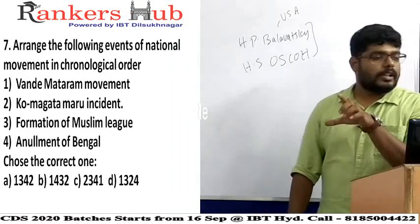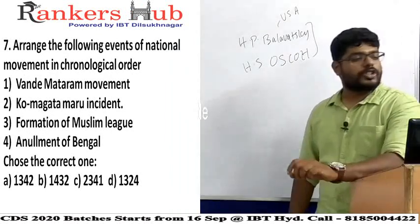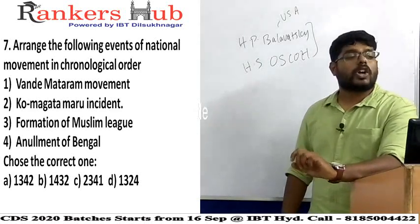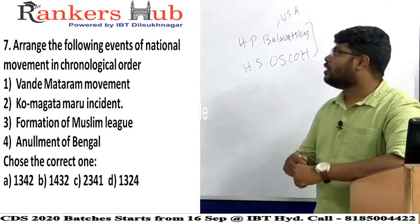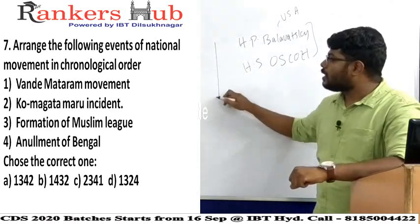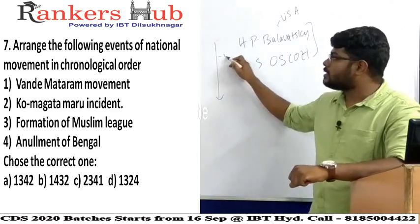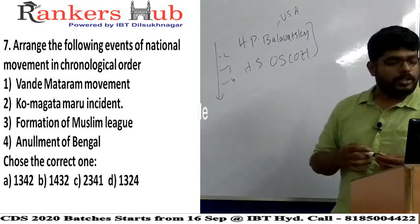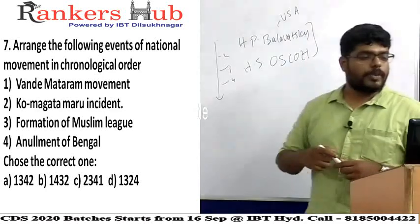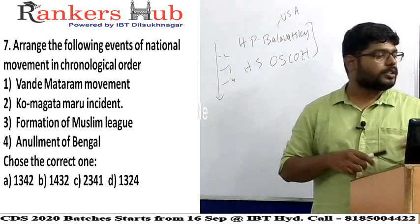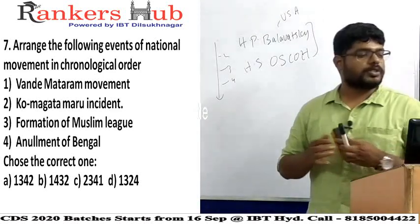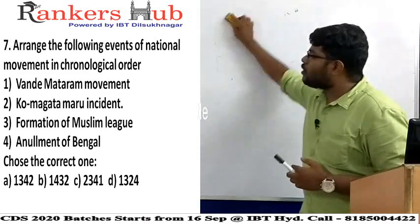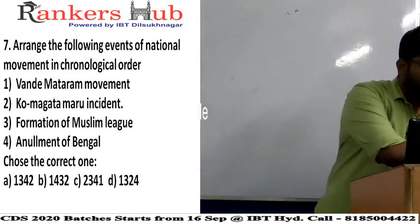Question seven is based on arranging events of the national movement in chronological order. Chronological order means from start to end: which started first, second, third, fourth. The options are: 1) Vande Mataram Movement, 2) Komagata Maru Incident, 3) Formation of Muslim League, 4) Annulment of Bengal partition.